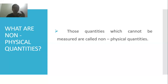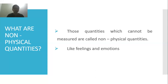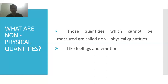So the actual examples of non-physical quantities are feelings and emotions. If I'm happy today, how much happy am I exactly? I can't count it. If I talk about my excitement for something, you can't count it. Feelings and emotions cannot be measured or counted — so these are the examples of non-physical quantities.